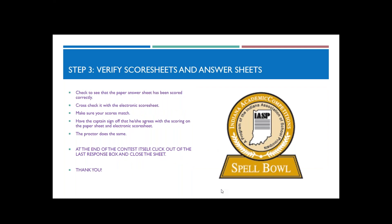Step three, after you've scored each one of the questions of the round, is to verify the scoresheets and the answer sheets. You need to check to see that the paper answer sheet has been scored correctly and cross-check it with the electronic scoresheet and make sure the same entry for each question is on the electronic scoresheet as well as on the paper sheet. Then you'll have the captain sign off that he or she agrees with the scoring on the paper sheet and the electronic scoresheet. The proctor, that would be you, also does the same. At the end of the contest itself, you'll need to click out of the last response box and close the sheet. That's all you need to do.